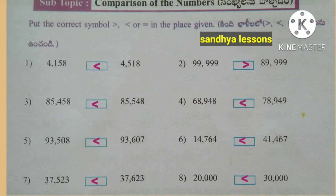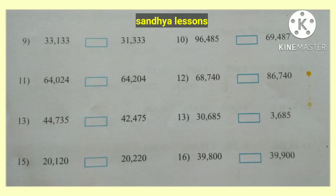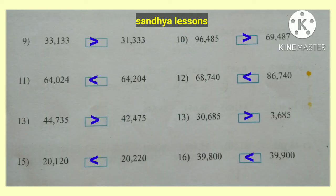37523 is less than 37623. 20,000 is less than 30,000. 33133 is greater than 33333. Wait — 33133 is less than 33333. 96485 is greater than 69487. 64204 is equal to 64204. 68740 is less than 86740.